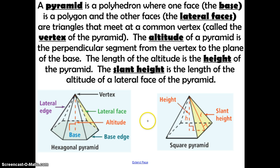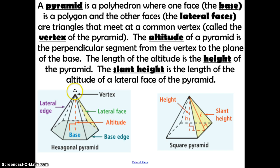A pyramid is a polyhedron where one face, the base, is a polygon, and the other faces — the lateral faces — are triangles that meet at a common point called the vertex of the pyramid. The altitude of the pyramid is the perpendicular segment from the vertex to the plane of the base, and the length of the altitude is the height of the pyramid. The slant height is the length of the altitude of a lateral face of the pyramid.